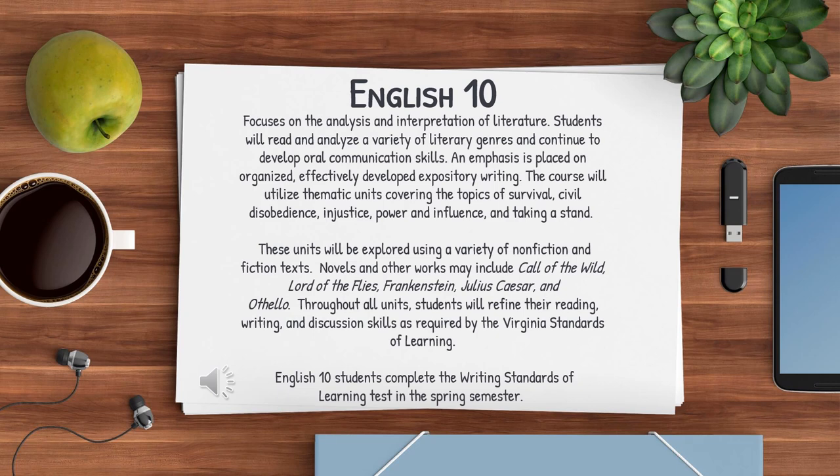English 10 focuses on the analysis and interpretation of literature. Students will read and analyze a variety of literary genres and continue to develop oral communication skills. An emphasis is placed on organized, effectively developed expository writing. This course will utilize thematic units covering the topics of survival, civil disobedience, injustice, power and influence, and taking a stand.